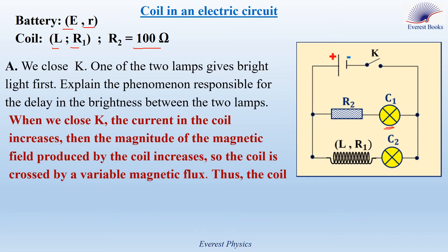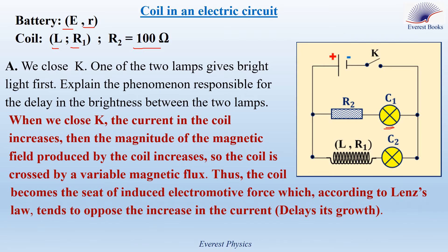When we close K, the current in the coil increases, then the magnitude of the magnetic field produced by the coil increases. So the coil is crossed by a variable magnetic flux. Thus the coil becomes the seat of an induced electromotive force which, according to Lenz's law, tends to oppose the increase in the current or delays its growth.